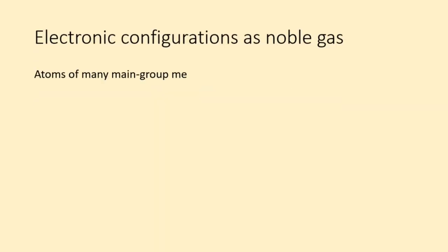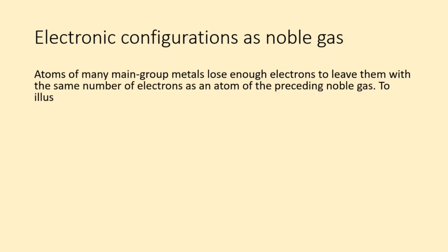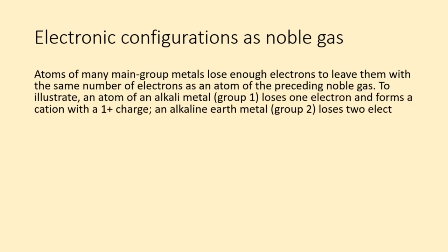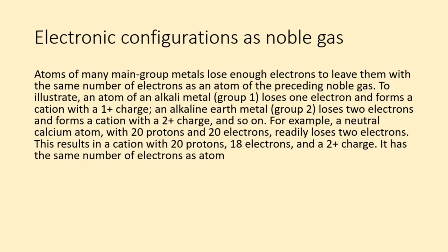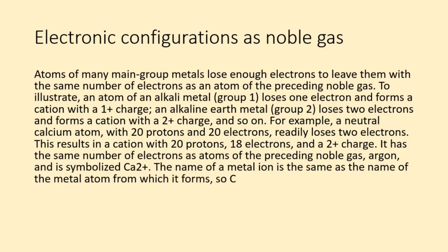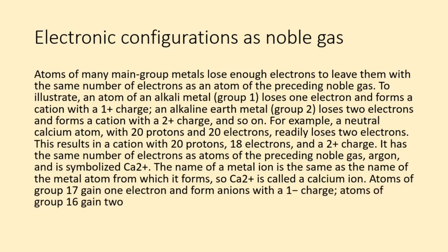Atoms of many main group metals lose enough electrons to leave them with the same number of electrons as an atom of the preceding noble gas. To illustrate, an atom of an alkali metal, group 1, loses 1 electron and forms a cation with a 1+ charge. An alkaline earth metal, group 2, loses 2 electrons and forms a cation with a 2+ charge, and so on. For example, a neutral calcium atom, with 20 protons and 20 electrons, readily loses 2 electrons. This results in a cation with 20 protons, 18 electrons, and a 2+ charge. It has the same number of electrons as atoms of the preceding noble gas, argon, and is symbolized Ca2+. The name of a metal ion is the same as the name of the metal atom from which it forms, so Ca2+ is called a calcium ion.